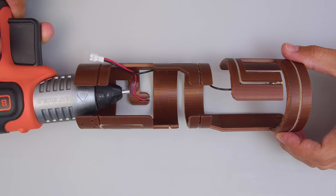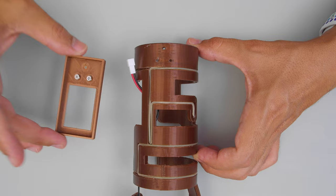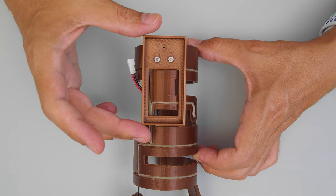Hot glue secures the JST cable to the inside of the armband to keep it concealed. A separate mounting plate is secured with screws for the 9V battery holder.